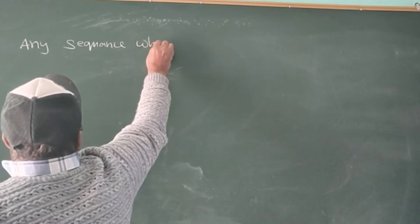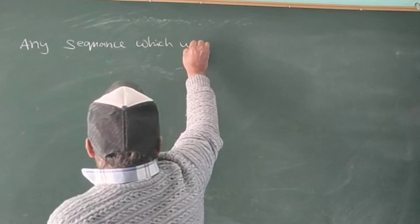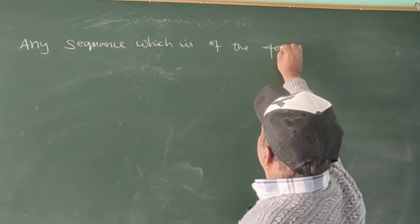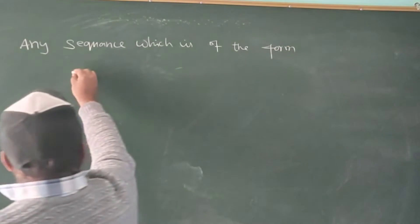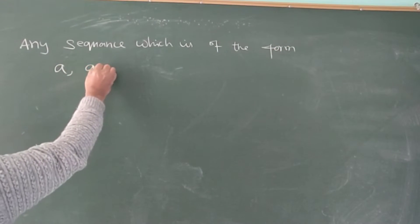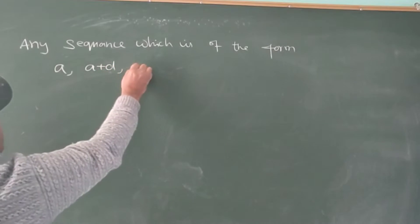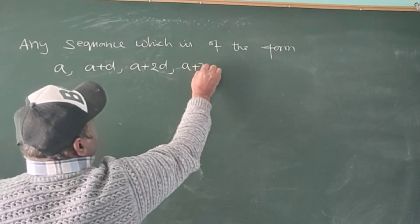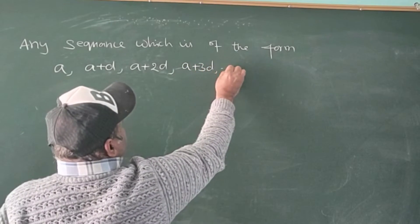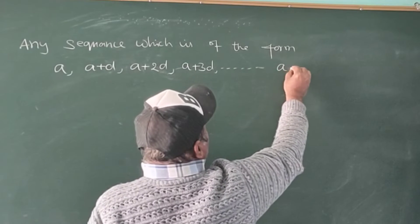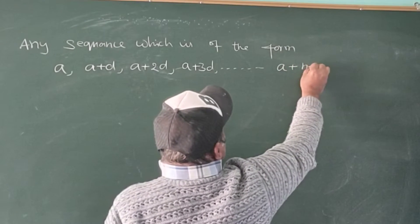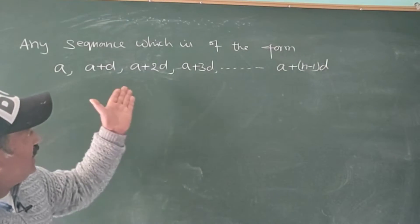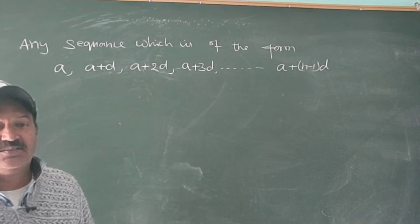A sequence of the form A, A plus D, A plus 2D, A plus 3D, and so on up to A plus N minus 1 into D is called an arithmetic progression.